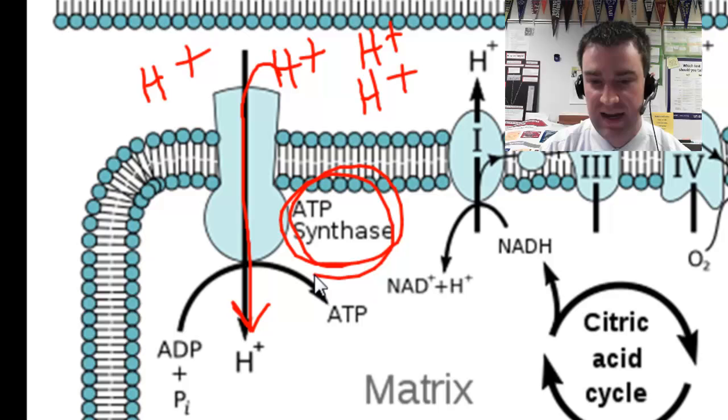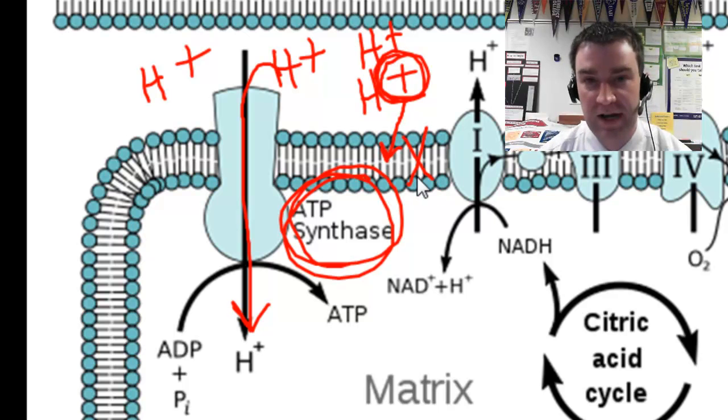Make sure you note that name that's a very important name and it's the only protein that they're going to be able to go through to get back into the matrix. Recall that being fully charged ions they're not going to be able to travel through the phospholipid bilayer. The nonpolar tails are going to block them from going that way.